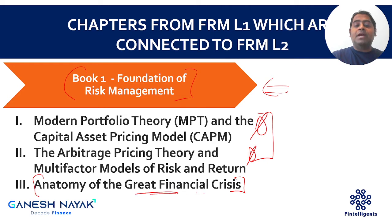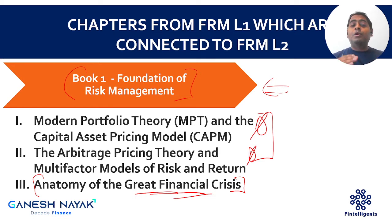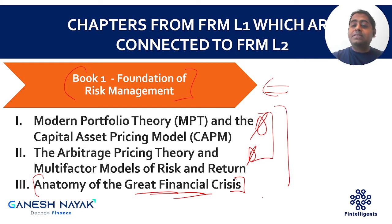There is also the chapter 'Anatomy of the Great Financial Crisis.' In Level 2, many chapters discuss what happened during the 2007–2008 financial crisis. Having a good understanding of this chapter gives you an edge — you will be able to connect a lot of dots when reading those Level 2 chapters. So from Book 1, these three chapters are primarily connected to Level 2.